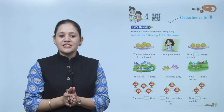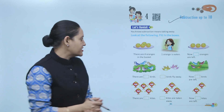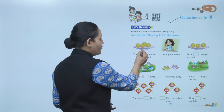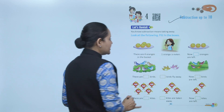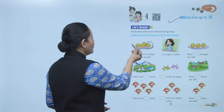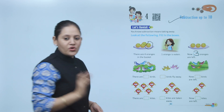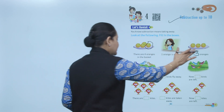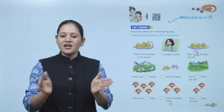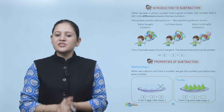Let's revisit — subtraction means taking away. Look at the following and fill in the boxes. Here there are 4 oranges in a basket. If 1 orange is eaten, how many are left? 1, 2, 3 — now 3 oranges are left. So 4 minus 1 equals 3. That means subtraction means taken away.